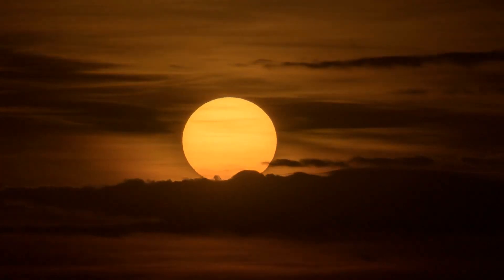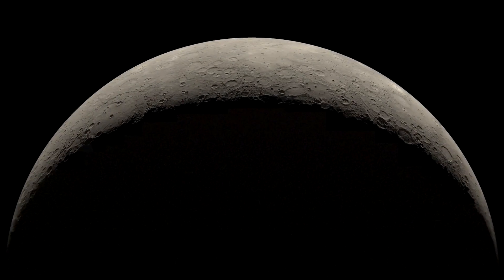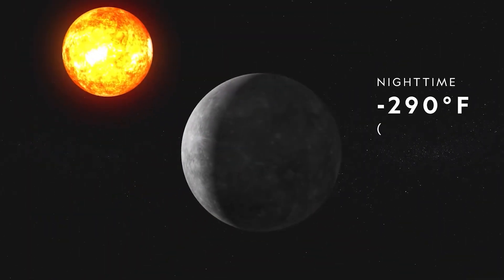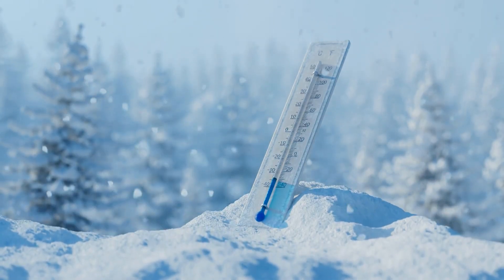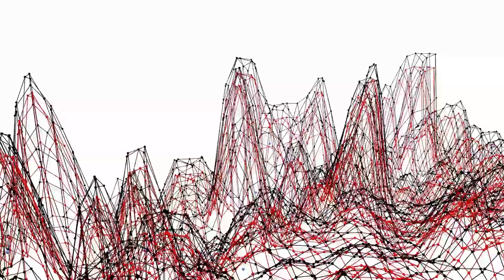But when the sun sets, things take an abrupt turn. At night, temperatures on Mercury plummet to an astonishing minus 280 degrees Fahrenheit, which is colder than most places on Earth. Now, you might wonder why such extreme fluctuations happen.